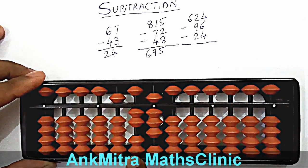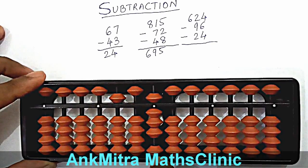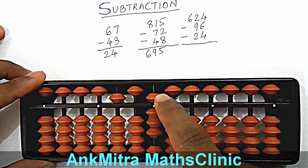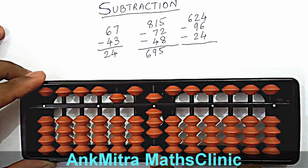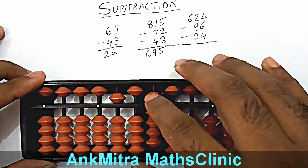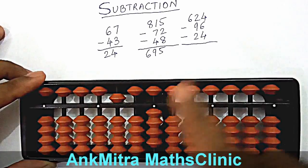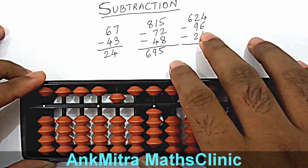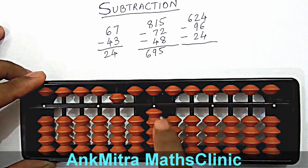Now coming to the next sum, minus 24. So on the tens place, we have 2 beads available, so we can do minus 20 directly. On the units place, we don't have 4 beads available, but we have 5 available for subtraction. So we can use the small friend formula for subtracting 4. Small friend of 4 is 1. So we'll add 1 and subtract 5 to finish the minus 24. The final answer from 624 minus 96 minus 24 is 504.